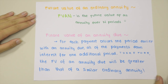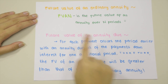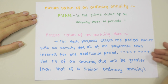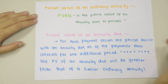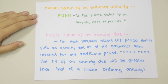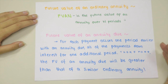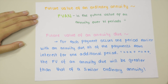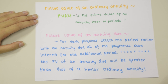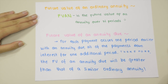Future value of an ordinary annuity is the future value of an annuity over N periods. The future value of an annuity due is where each payment occurs one period earlier; with an annuity due, all of the payments earn interest for one additional period. Therefore, the future value of an annuity due will be greater than that of a similar ordinary annuity.